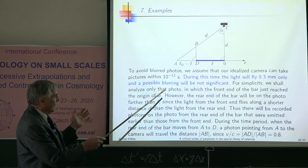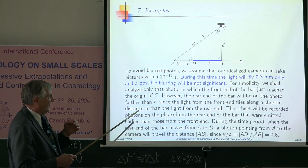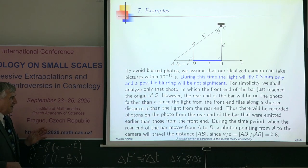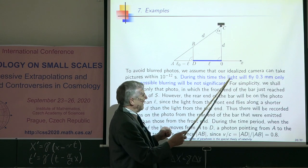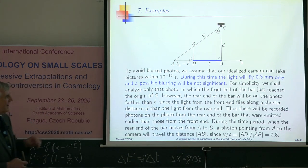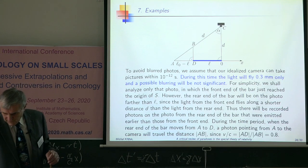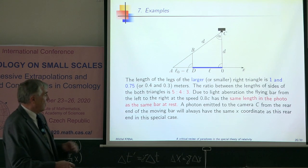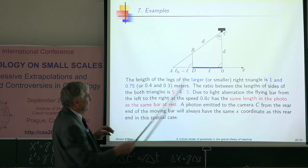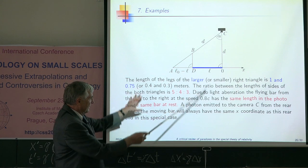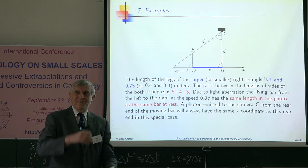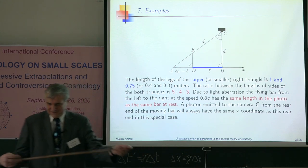There are some assumptions, because you should have some idealized camera which can take pictures every picosecond. Because during one picosecond, light will fly only 0.3 millimeters. A possible blurring will be not significant. I have chosen this example so that this is standard Pythagorean triangle 3, 4, 5. In this special example, the bar will have the same length on the photograph and also when it is fixed.